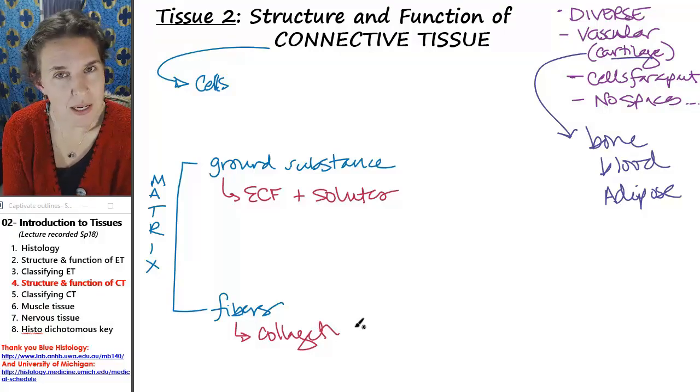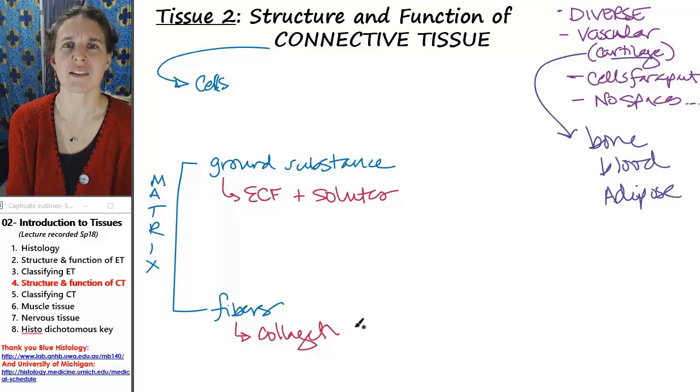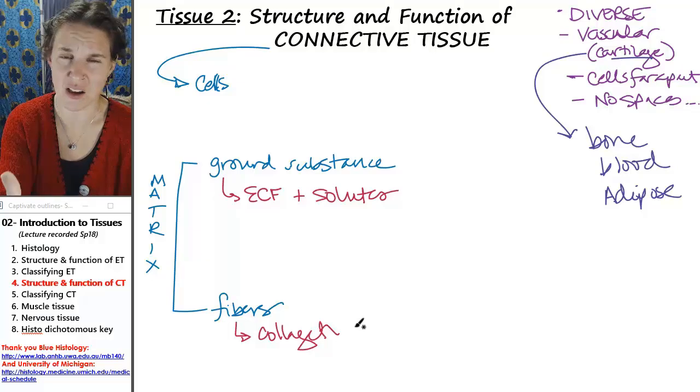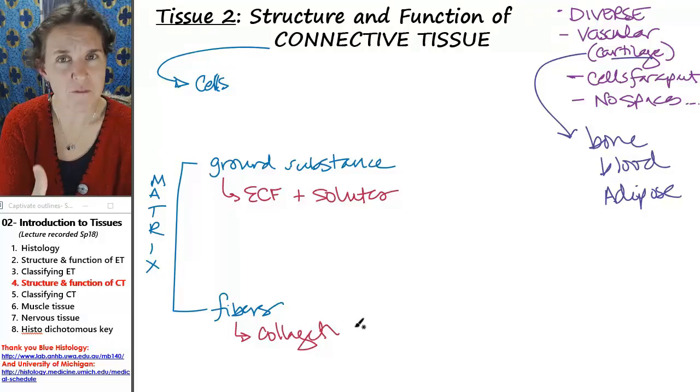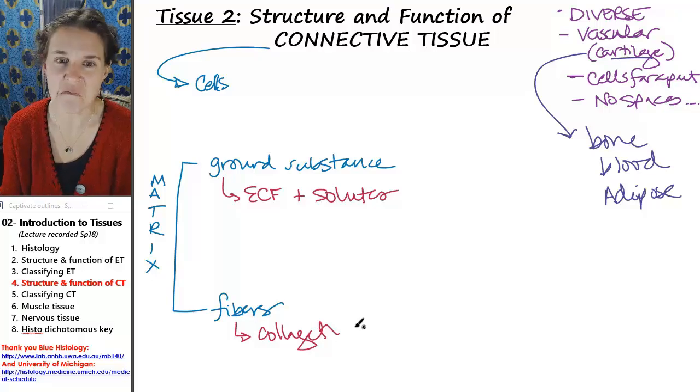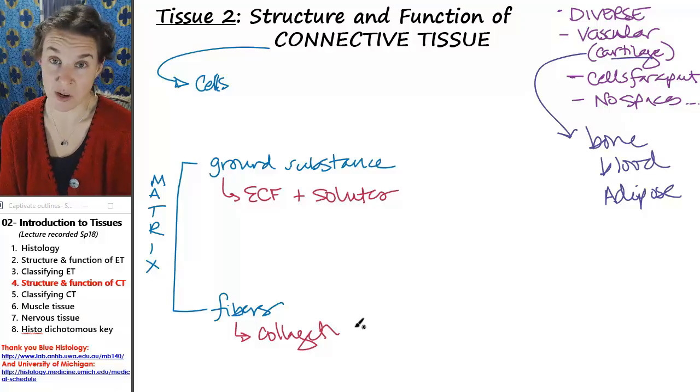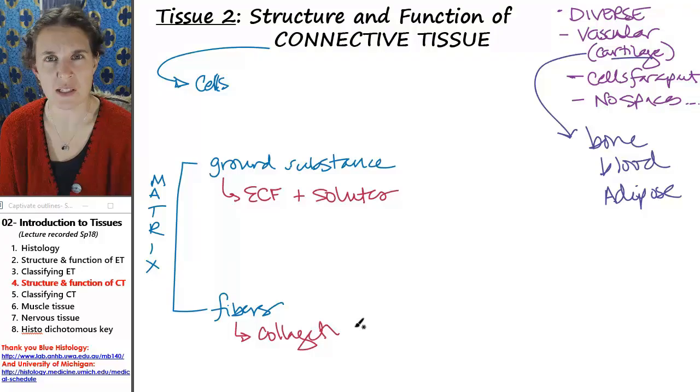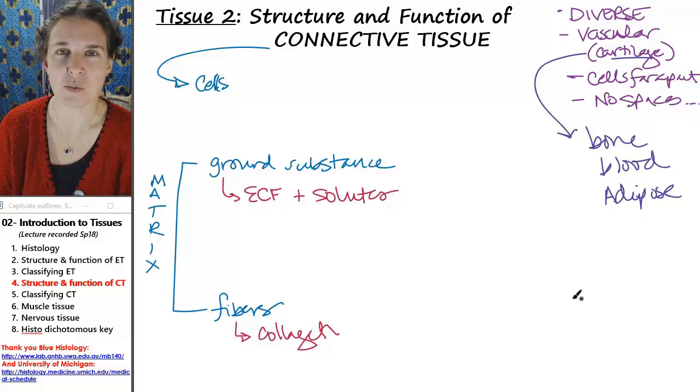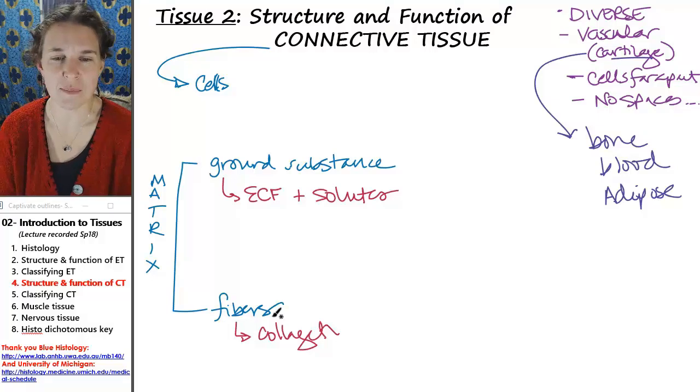Bone matrix is solid. The solutes in the ground substance are calcified, and the fibers are strong collagen fibers. Blood fibers are rare. There's not very many fibers, and the ground substance is lots. So the characteristics of our matrix will determine what we're going to see for our connective tissues.